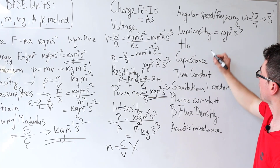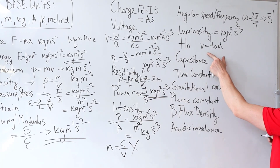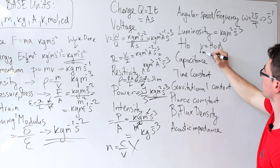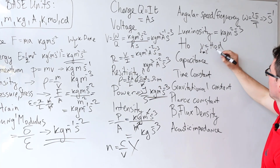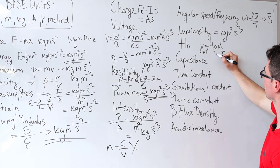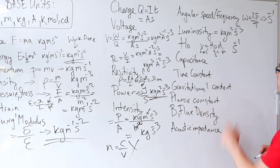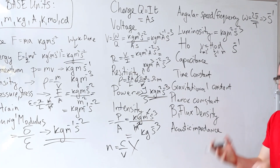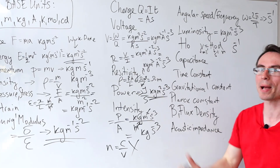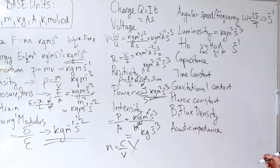Hubble's constant H₀ — remember v is equal to H₀ times d. Velocity is in meters per second and distance is in meters, therefore H₀ will be in s to the power of minus one as a standard base unit. Typically it's given in kilometers per second per megaparsec, and we'd need to convert that to SI units.